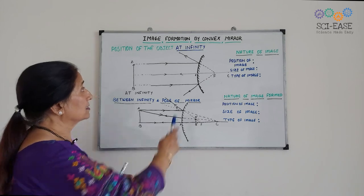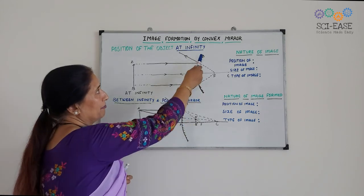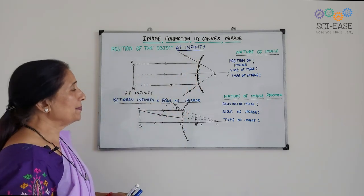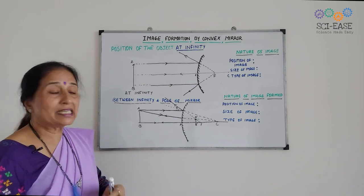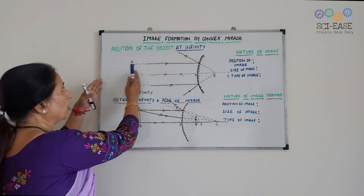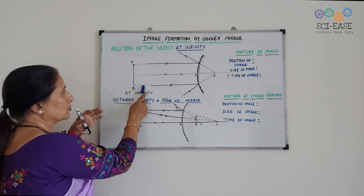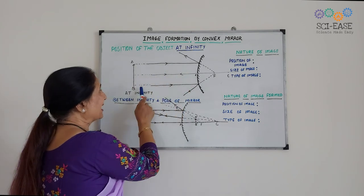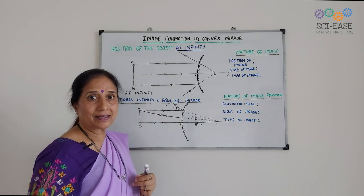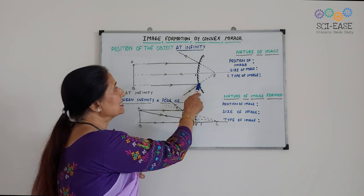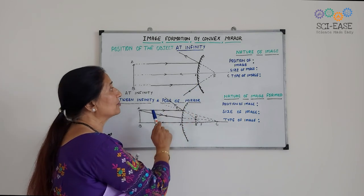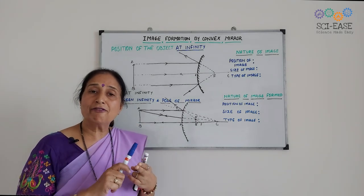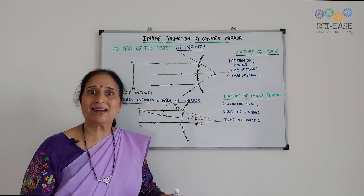This is the convex mirror. The reflecting surface is like this — the rays will strike here. In the first case, when the object is at infinity, the object is quite far off, which is why I have put these dotted lines. The rays parallel to the principal axis will strike the reflecting surface and then these rays will diverge. I have already told you that convex mirrors are diverging mirrors.